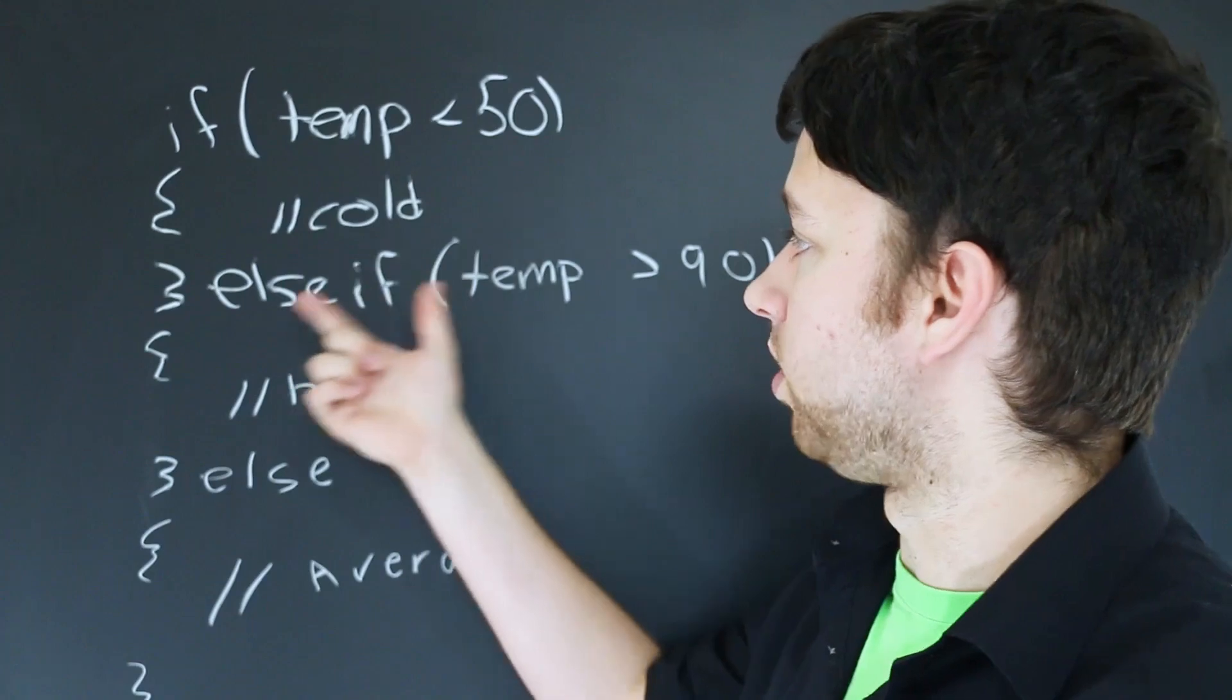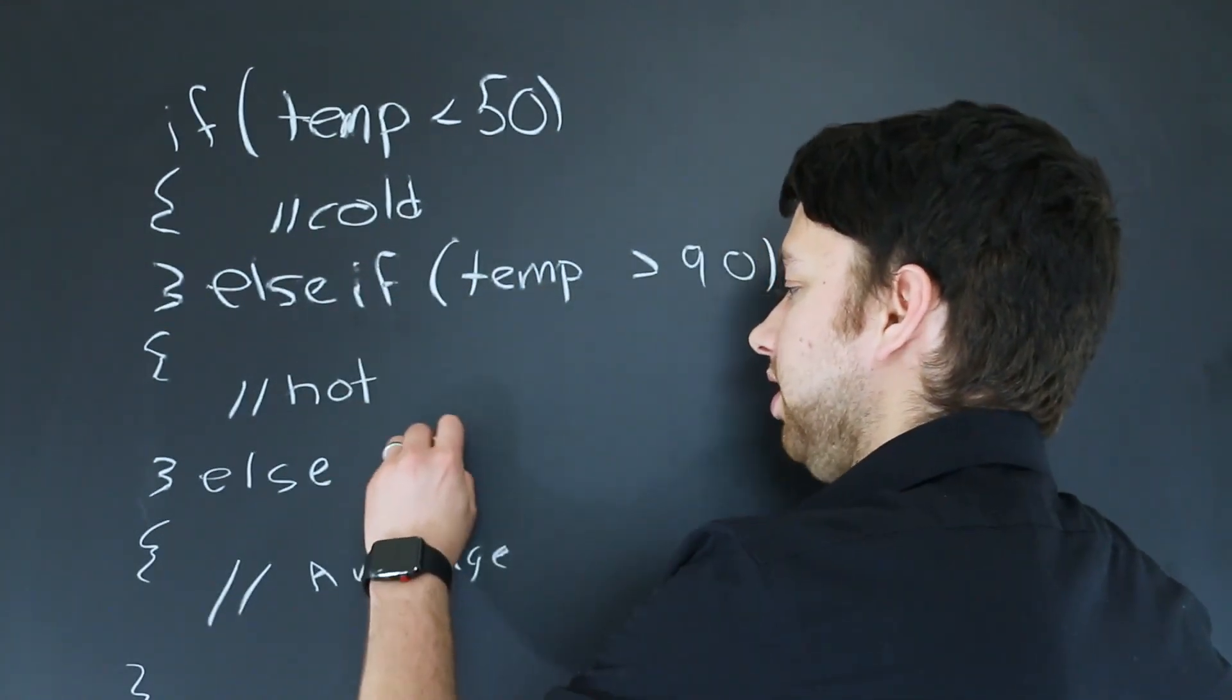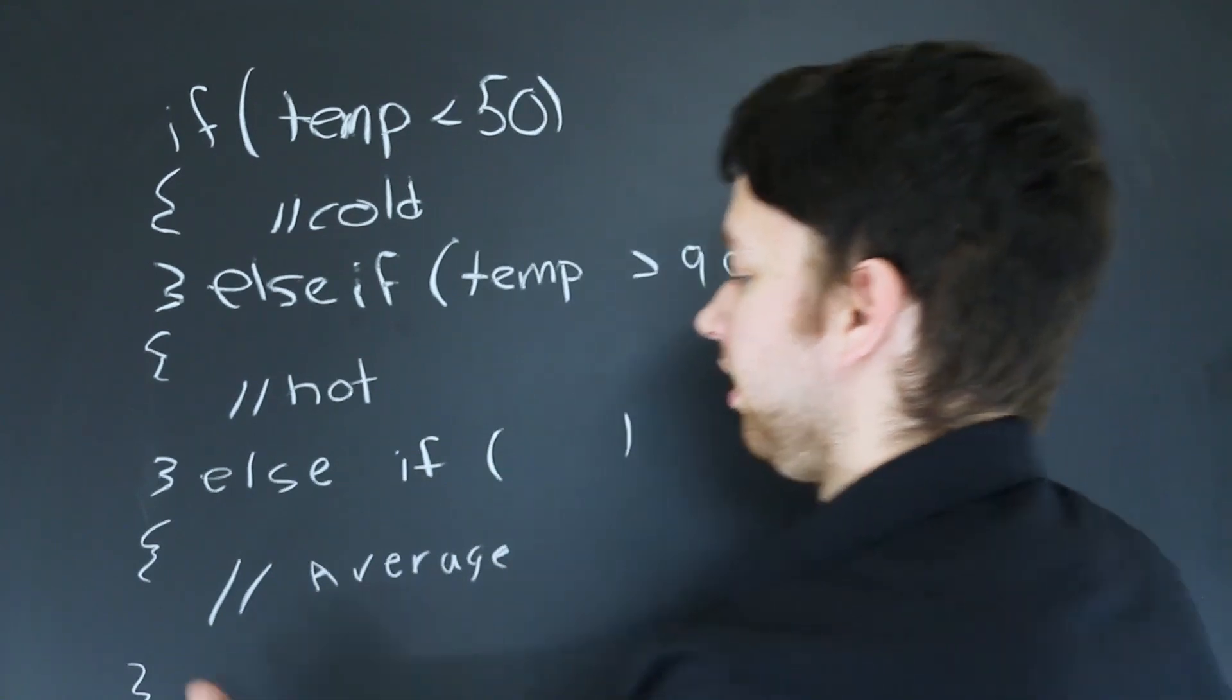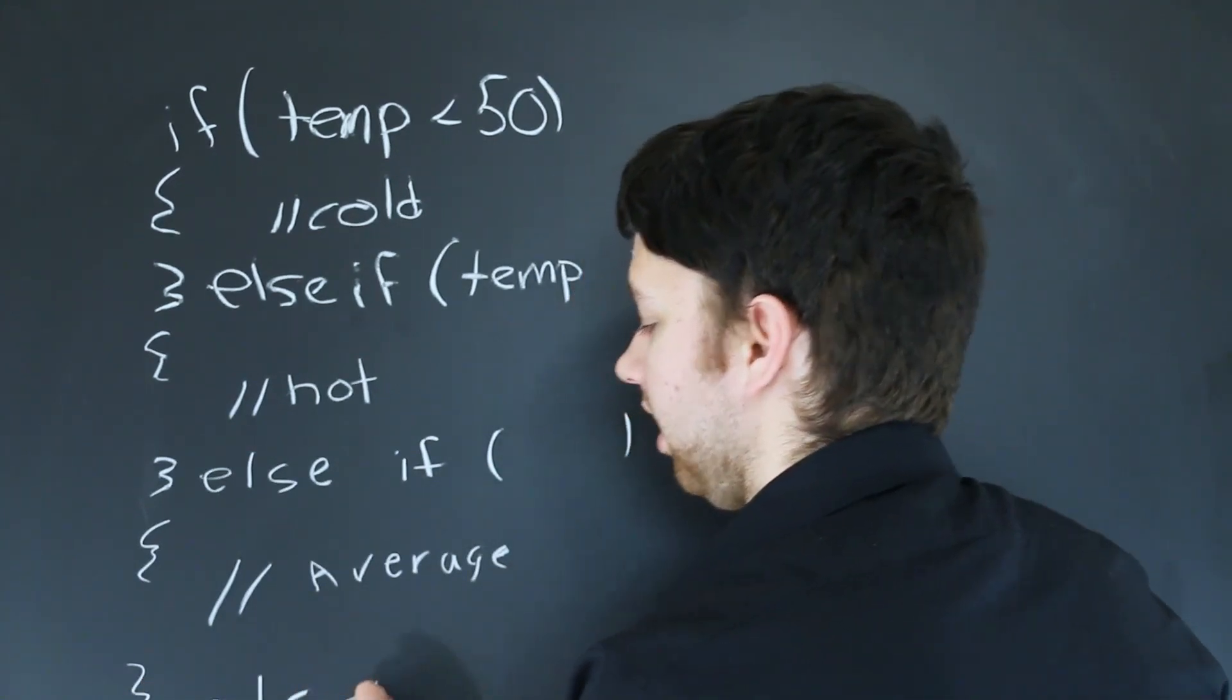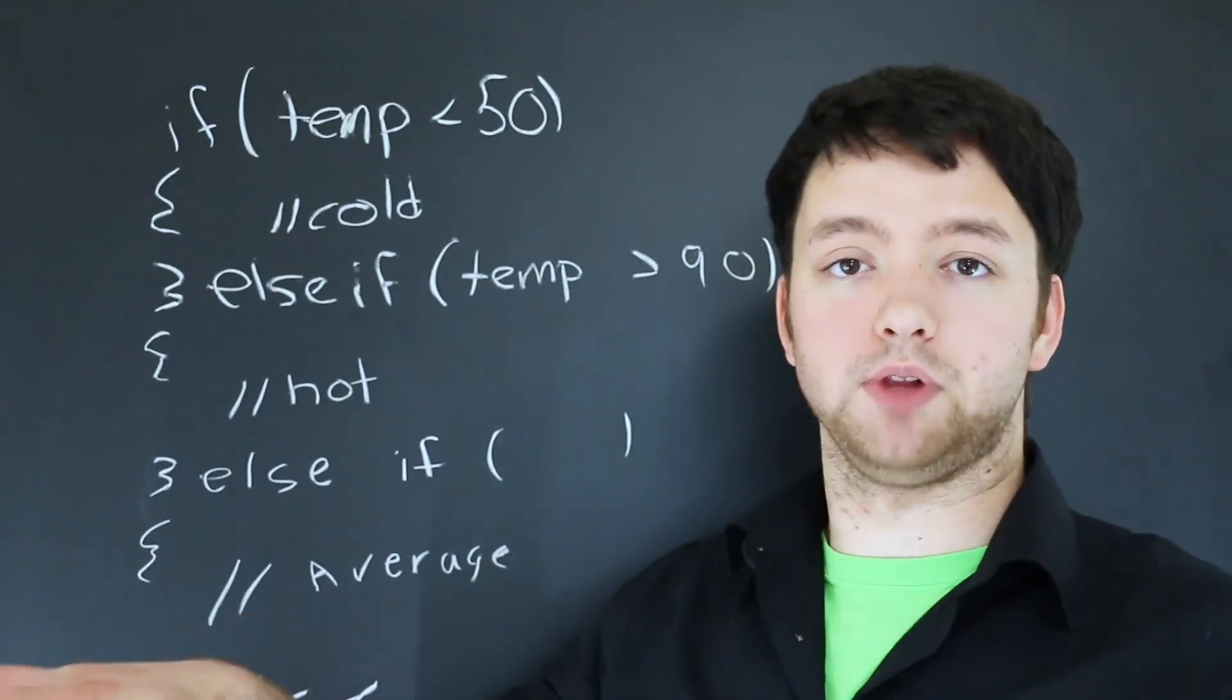Also you can have more than one else if if you would like. So for example you could make else if here. Put another condition. And then have else. So you can branch in essentially as many directions as you like.